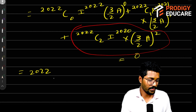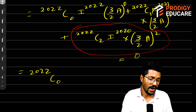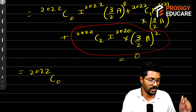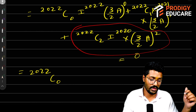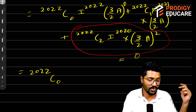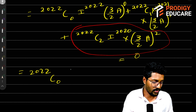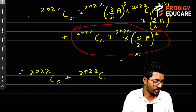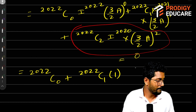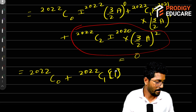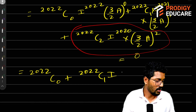So what remains is: 2022C0 times I to the power 2022, and since A to the zero equals I, plus 2022C1 times I (since I raised to any power is identity) times (3/2) times A. So we simplify to: NC0 times I plus 2022C1 times (3/2) times A.